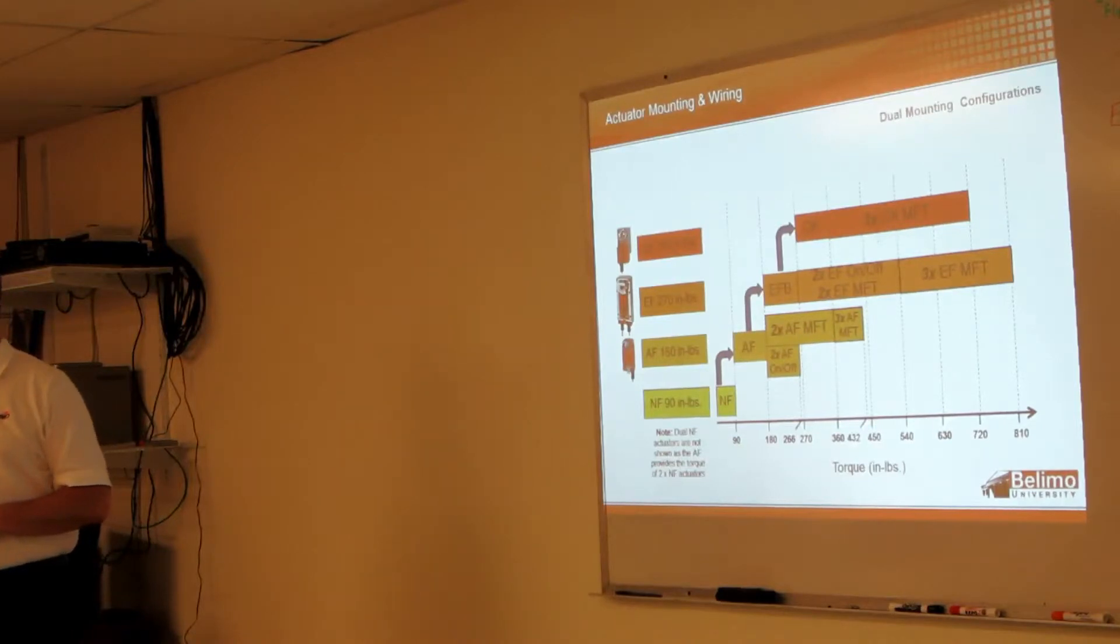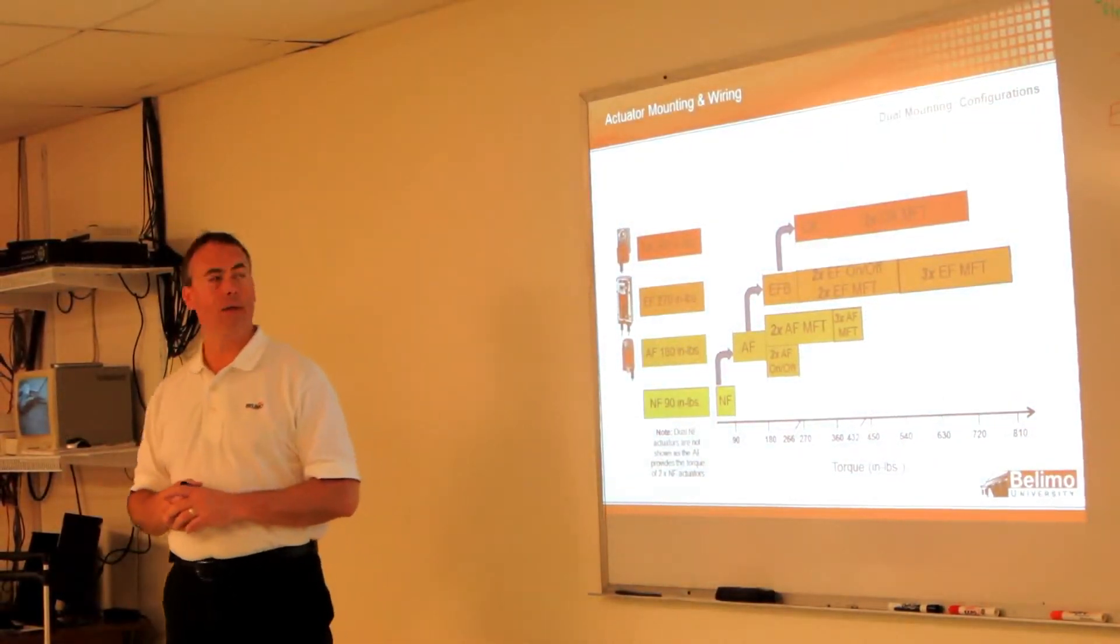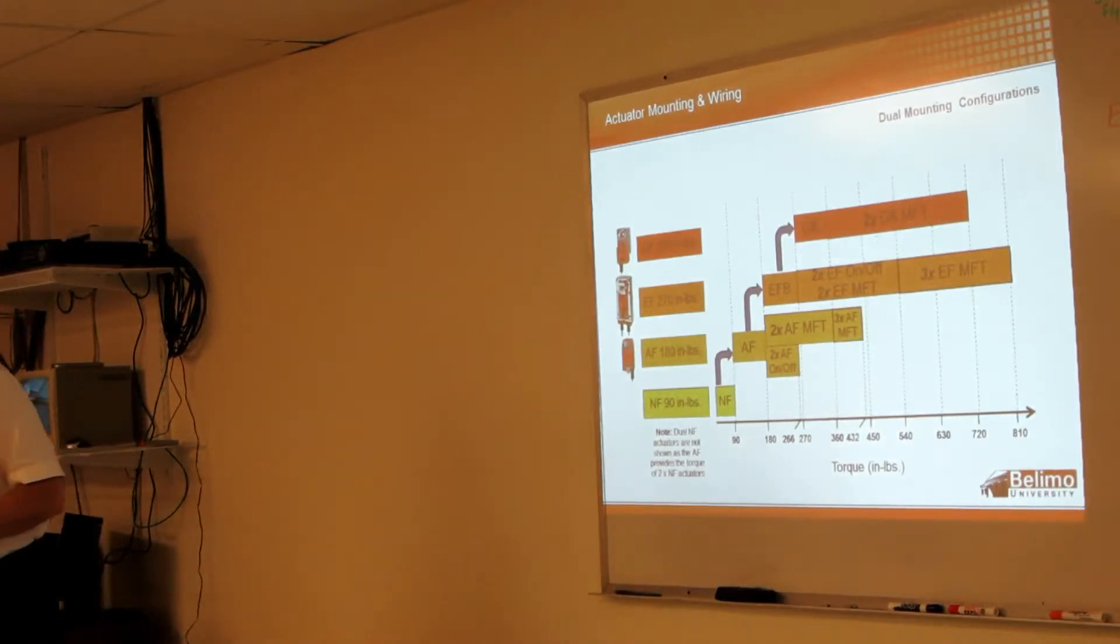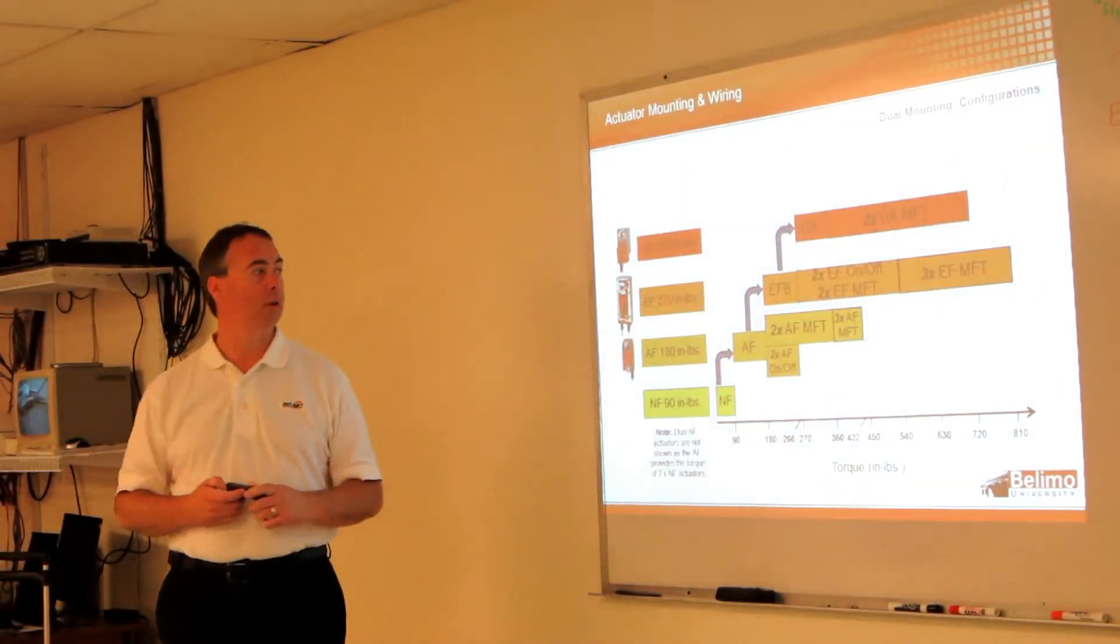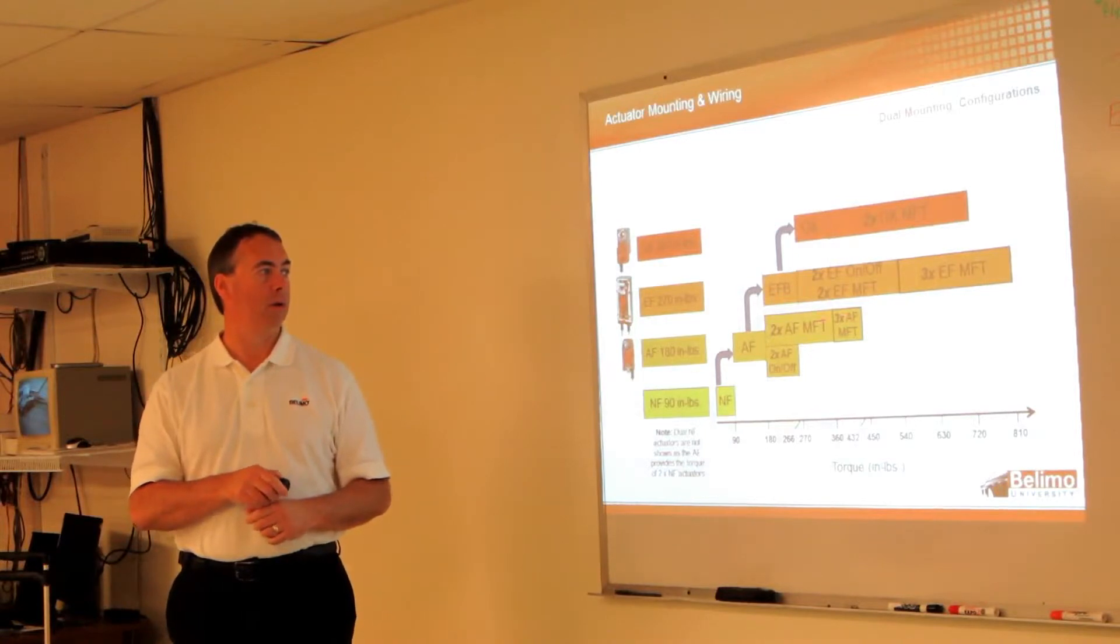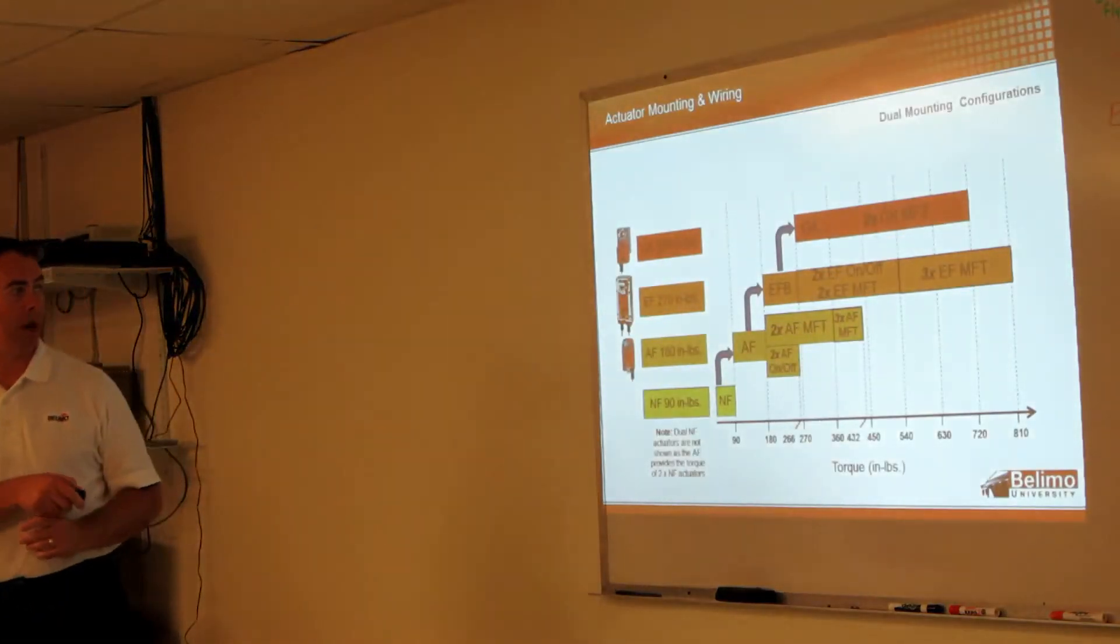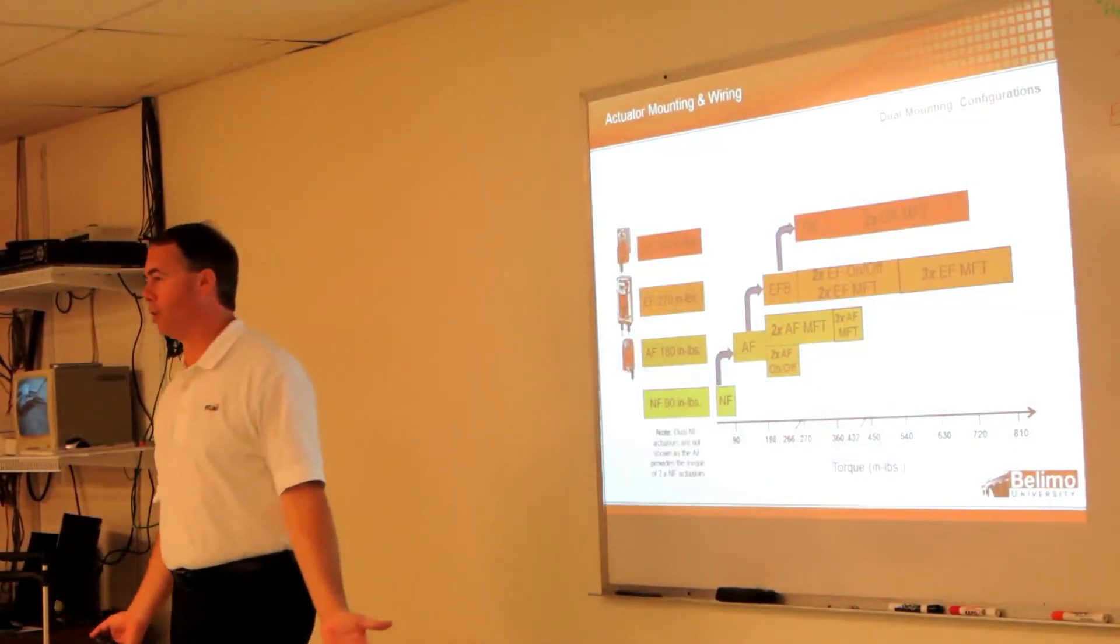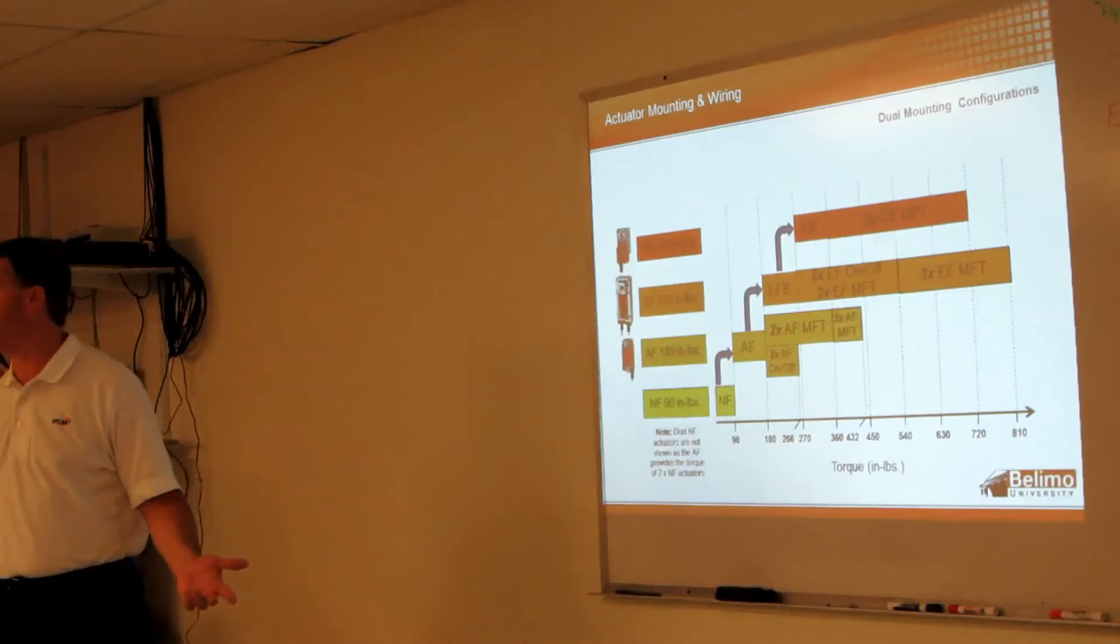This is showing how many actuators you can mount in the dual configuration. So the GK, our largest electronic fail-safe. You mount two of those. You mount up to three of the EF, the largest spring return. And then you can mount three of the EF and EF models as well. But when we're talking about two position EFs, you can only mount two. And then once you get down to the NF, there's really no reason to tandem mount. Because the NF is 90 inch-pounds. An AF is 180. So just put an AM on instead of two NFs.